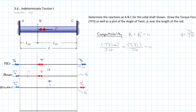Simplifying — the full length can be expressed as L_AB plus L_BC, and the J and G terms cancel. Isolating T_C, we find that T_C equals T times L_AB divided by L. That is one of our reactions.